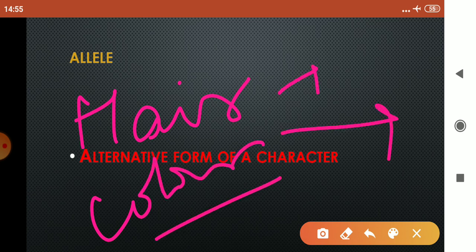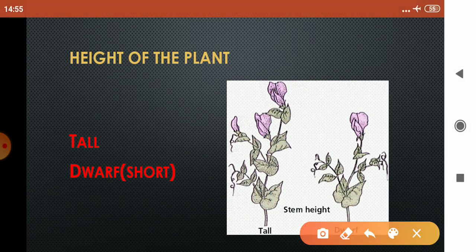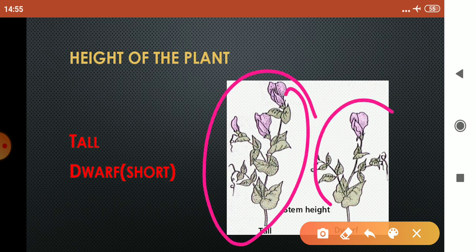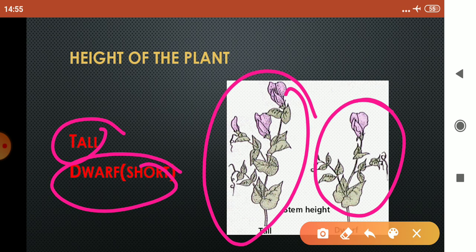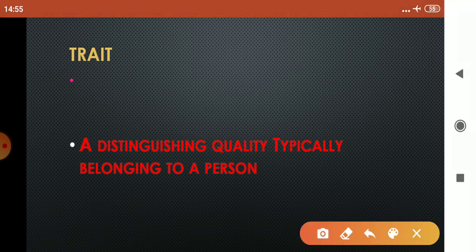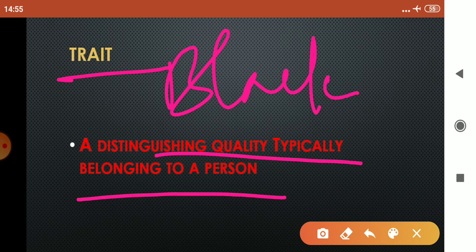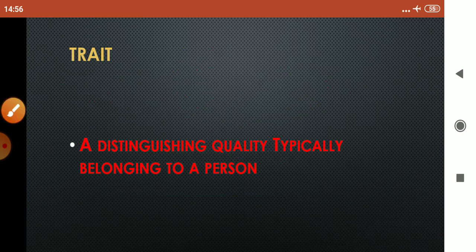So this was about allele. Now children here an example is given this is a tall plant this is a short plant so tall and dwarf or short are the alleles and height of the plant is the character. So children now next term is a trait. Trait is a distinguishing quality typically belonging to a person suppose maine kaha ki mera eye color black hai so this black eye color is my trait. Kisi particular person ka koi character jo kisi ek particular person mein present hoga jo usko distinguish karta hai baaki logon se that will be called as a trait.